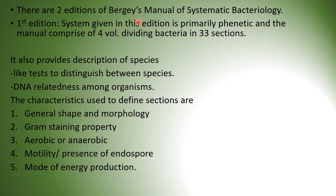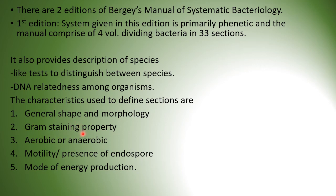There are two editions of Bergey's manual of systematic bacteriology. In the first edition, the system is primarily phenetic, and the manual comprises four volumes dividing bacteria into 33 sections. It also provides descriptions of species, such as tests to distinguish between species and DNA relatedness among organisms. The characteristics used to define sections are general shape, morphology, gram-staining property, aerobic or anaerobic nature, motility, presence of endospores, and mode of energy production.